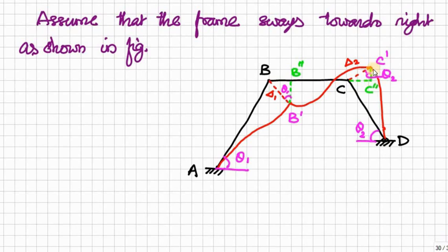Similarly, this is also a right triangle. Theta 1 is the inclination of AB member with respect to the horizontal, and theta 2 is the inclination of CD member with respect to the horizontal. Delta 1 and delta 2 are shown here. The length of member BC is not changing, therefore B to B-double-dash equals CC-double-dash, that is horizontal movement. We can relate delta 1 and delta 2 to replace one of the unknowns.